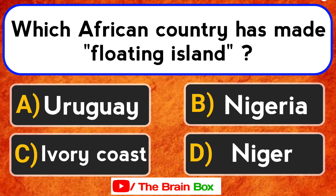Which African country has made a floating island? Your options are: Option A, Uruge. Option B, Nigeria. Option C, Ivory Coast. Option D, Niger.